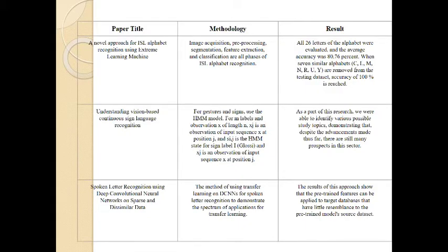Otherwise, the accuracy was not 100%. For example, in one research paper, alphabets like C, L, M, N, R, and U caused the researchers to achieve only 80.76% accuracy. If those alphabets were removed from the project, only then would they get 100% accuracy. Through this survey, we also added features in our project so that we can achieve maximum accuracy and efficiency possible, and fill the communication gap that is prevailing in our society.